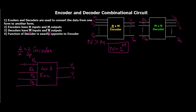Only one input is allowed to be high at a single time, and that has to be mapped to the output lines. How many unique binary bits are required to represent each line uniquely? If you give a 2-bit binary address to each line, you get four unique codes: 00, 01, 10, and 11. That is the reason why we have an output of only two lines.